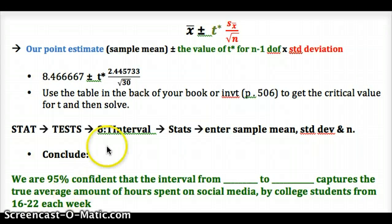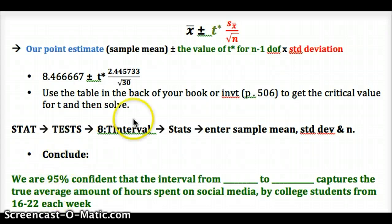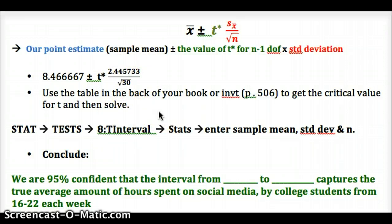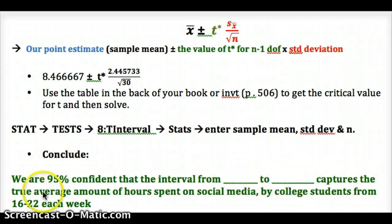Let's see what the calculation looks like. We have our sample mean plus or minus the t-critical value based on our confidence level of 95% and our degrees of freedom — remember we use n minus 1 for that — times the standard error. The sample size is 30. For the multiple choice question, I'd like you to solve this: what is the confidence interval? Make sure you find the correct value of t and then solve this through correctly.